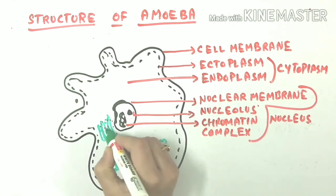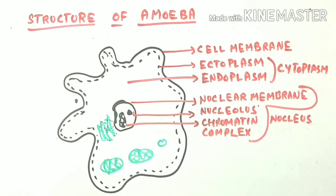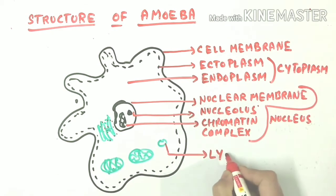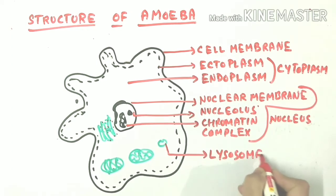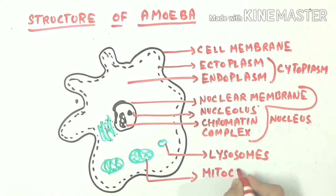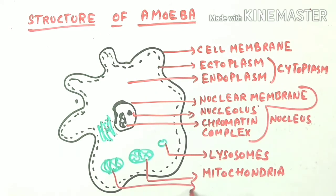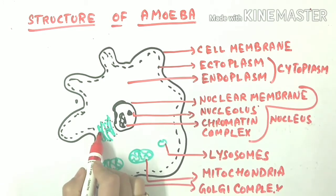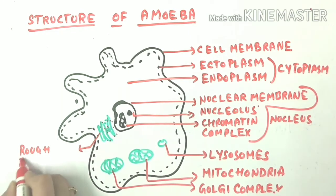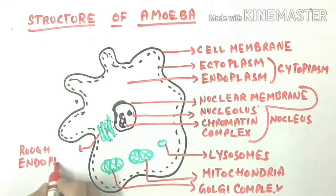These small dots are ribosomes, and when ribosomes are present on the endoplasmic reticulum it is known as rough endoplasmic reticulum. Lysosomes are simple spherical structures containing hydrolytic — digestive — enzymes. Mitochondria is a double membrane structure and the powerhouse of the cell. Golgi complex is associated with production of secretions, it forms lysosomes, packages proteins, and releases them — that's why it's called the post office. Endoplasmic reticulum consists of membranous tubular flattened sacs; it helps in protein synthesis and provides mechanical support and structure to the cell.